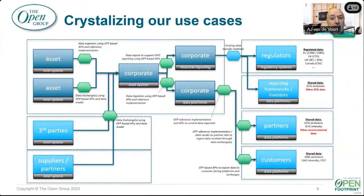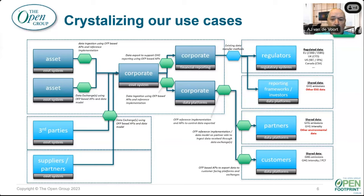This slide shows the multitude of use cases. Having been involved for about three years, we put up this slide to ask: what green box are we talking about? Is it between an asset and a corporate? Between a third party and a corporate? Between a corporate and a regulator, a reporting framework, or the EPA? OFP is the green part — for data exchanges within an organization shown in darker blue — and when talking about your supply chain or regulators, that is in lighter blue. This shows the depth and breadth of OFP.